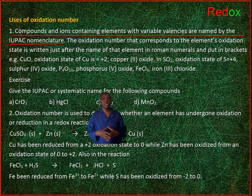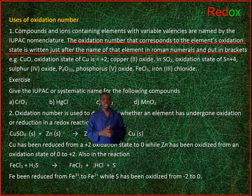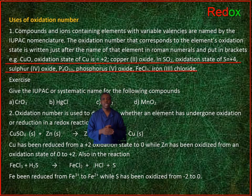Uses of oxidation number. 1. Compounds and ions containing elements with variable valences are named by the IUPAC nomenclature. The oxidation number that corresponds to the element's oxidation state is written just after the name of that element in Roman numerals and put in brackets. For example, copper oxide: the oxidation state of copper is plus 2, so we have copper(II) oxide. In sulfur dioxide, the oxidation state of sulfur is plus 4, so we refer to sulfur(IV) oxide.